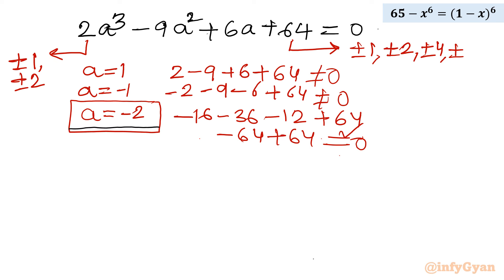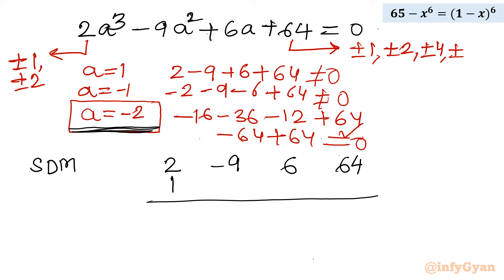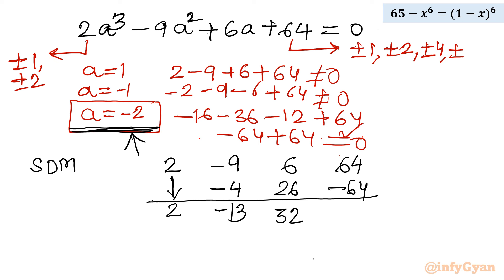Now we can apply synthetic division. Writing the coefficients of the cubic equation: 2, minus 9, 6, and 64. The leading term carries down as 2. Multiplying by minus 2: minus 2 times 2 gives minus 4, so the next coefficient is minus 9 plus (minus 4) equal to minus 13. Then minus 2 times minus 13 gives 26, and 6 plus 26 equals 32. Finally minus 2 times 32 gives minus 64, and 64 plus (minus 64) equals 0. The resulting quadratic factor is 2a² minus 13a plus 32 equal to 0.